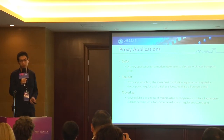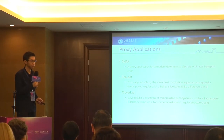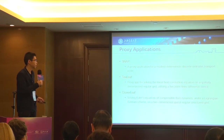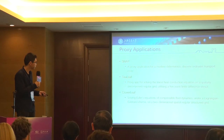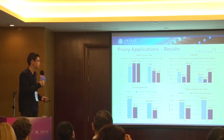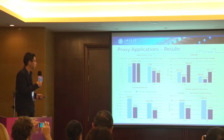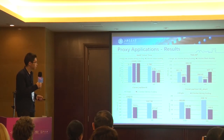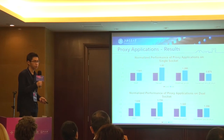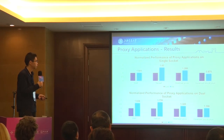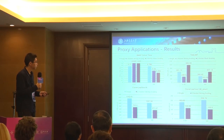We use three proxy applications to test this chip. They are all proxy or so-called mini applications — they represent some physical principles but do not have real-world meaning. We can have a glimpse at all results: Huawei's chip achieved better performance on almost all tests except for one, which I will explain. The performance is normalized based on Intel's chip, and the double socket results come from two-socket strong scaling.